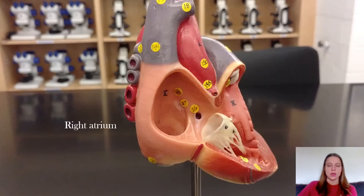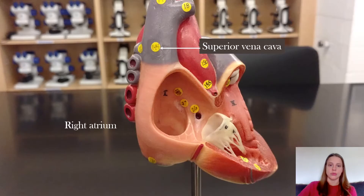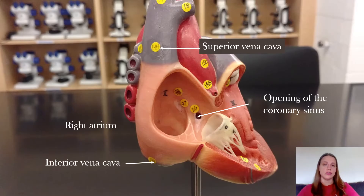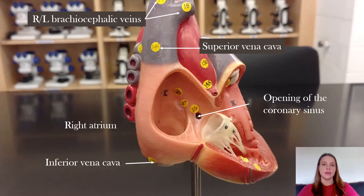Coming into the right atrium, you have blood returning from systemic circulation through the superior vena cava and inferior vena cava, and blood returning from coronary circulation through the opening of the coronary sinus. Coronary circulation is the circulation that feeds the walls of the heart. Also draining into the superior vena cava are the right and left brachiocephalic veins and the azygous vein.